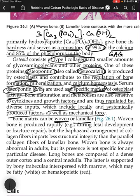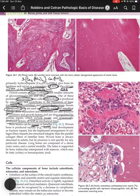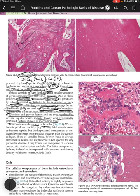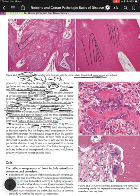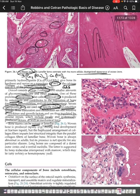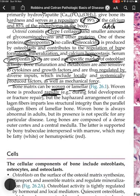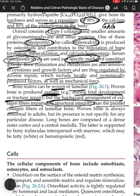Bone matrix can be woven or lamellar. Lamellar bone appears organized and is less cellular, whereas woven bone has a disorganized appearance and more cells because it is produced rapidly — during fetal development or fracture repair. The haphazard arrangement of collagen fibers in woven bone imparts less structural integrity than the parallel collagen fibers of lamellar bone. Woven bone is always abnormal in adults but not specific to any particular disease.